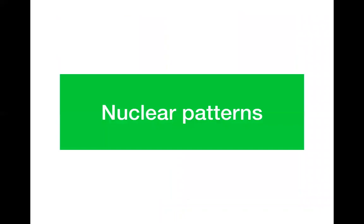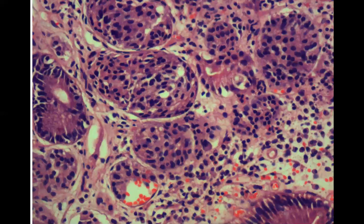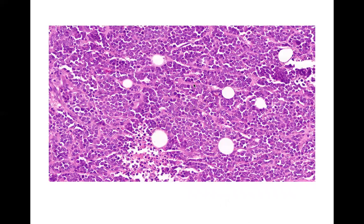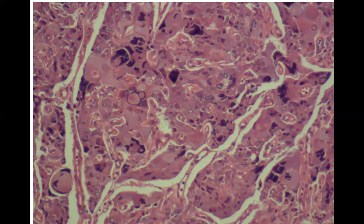Once we have understood staining patterns, we should also understand the different nuclear patterns seen on histology slides. Two patterns are usually described. First, monomorphic nuclei — when all nuclei appear relatively similar to each other. Monomorphic nuclei in histology generally indicate either a neuroendocrine carcinoma or a lymphoma, such as non-Hodgkin's lymphoma. Second, nuclear anisonucleosis — when there is marked variation in nuclear shapes and sizes, with some nuclei round, some very irregular and bizarre in shape.